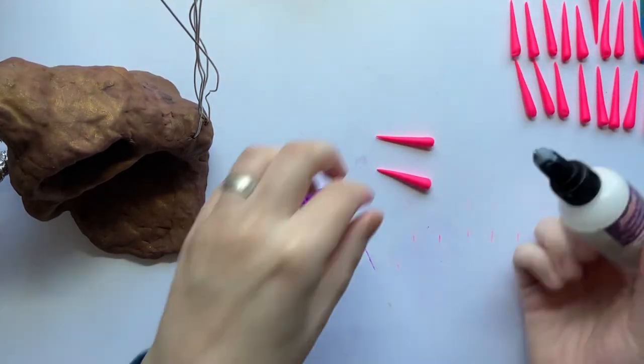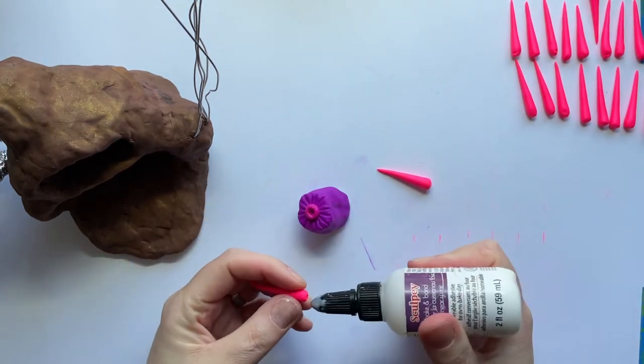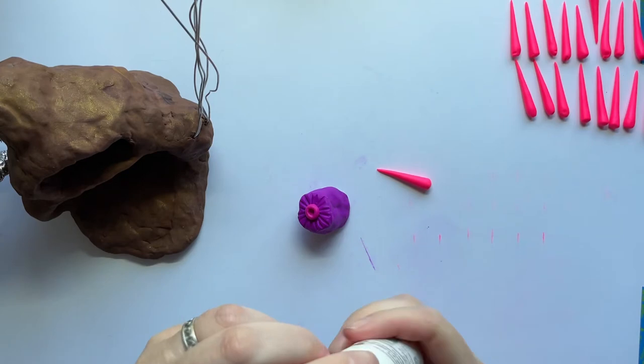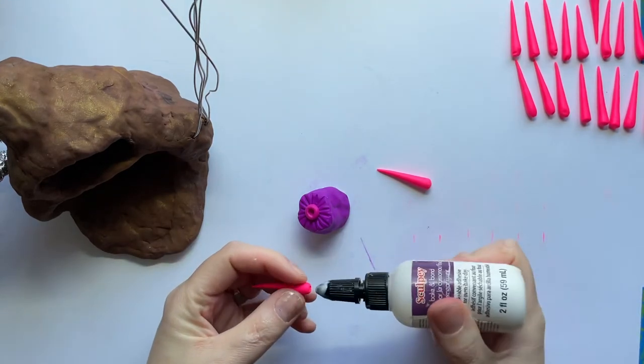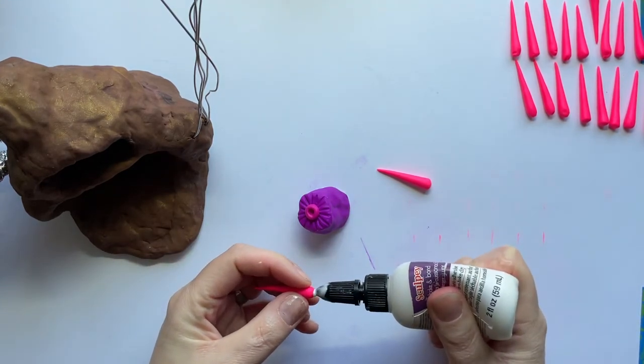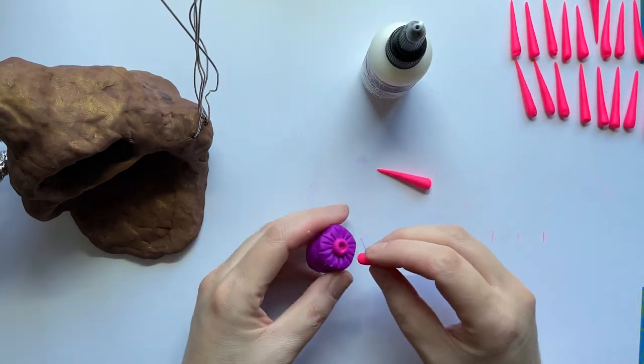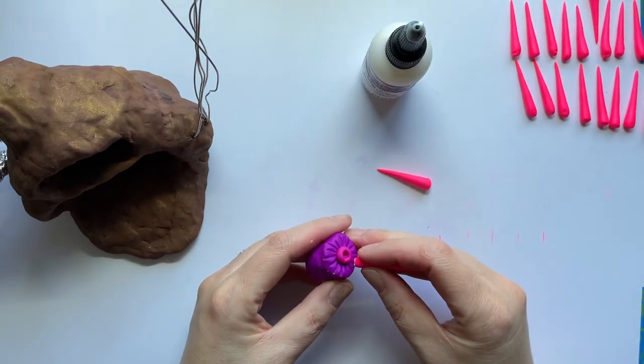Now whenever you add a tentacle on, you're gonna need to add just a little bit of glue and you're gonna start with the inside area first. So I'm just gonna have a little teeny bit of glue on the end there and I'm gonna push this on.